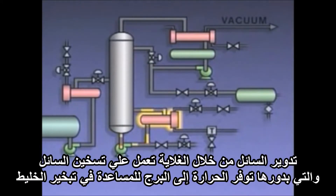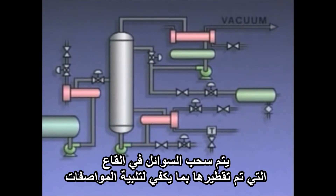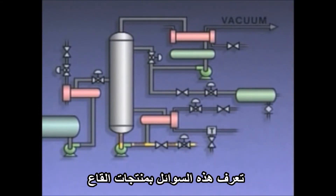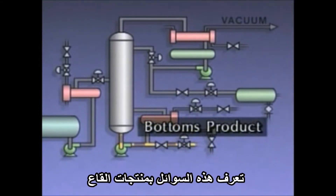Part of that liquid is circulated through a reboiler and back into the column. Circulating the liquid through the reboiler heats the liquid, which in turn provides heat to the column to help vaporize the mixture. Bottoms liquid that's been distilled enough to meet specifications is drawn off through a takeoff line. This liquid is known as the bottoms product.